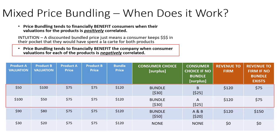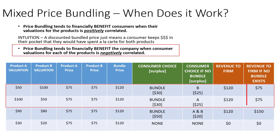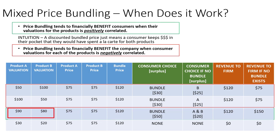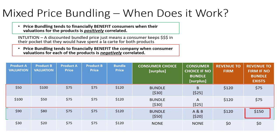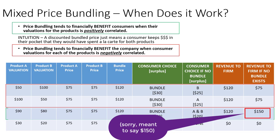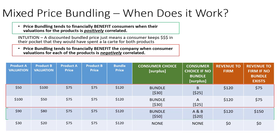Now let's see which scenario leaves the marketer better off. The first two customers have a negative correlation between their valuations. With the price bundle, revenue to the firm is $120 per customer — superior to revenue without a bundling option. However, Customer 3 had a positive correlation with both products. They purchased the bundle, driving $120 of revenue to the firm, but the marketer is worse off — because if only a la carte options had been offered, this customer would have purchased each individually and the marketer would have made $170. Whether price bundling makes sense is really a function of how customers value the products and the relationship between those valuations.